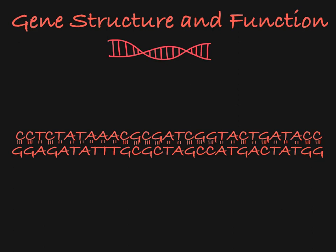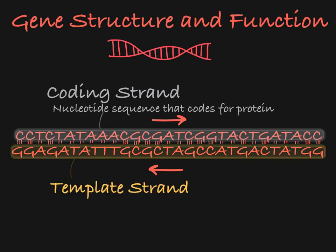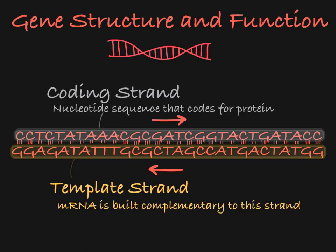One more thing to note about the gene is that it contains two strands of DNA running anti-parallel. One strand holds the nucleotide sequence that acts as the instructions to build the protein — this is called the coding strand. The other strand is called the template strand. To make a strand of mRNA that is a copy of the coding strand of the DNA, the mRNA will be built complementary to the template strand. This way, the sequence of the mRNA is exactly the same sequence of the coding strand, except that mRNA will have a uracil where the DNA will have a thymine.